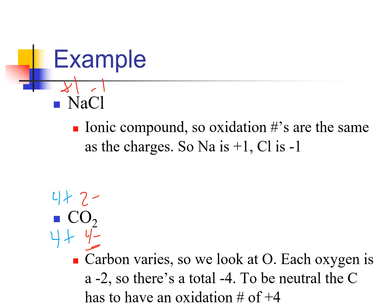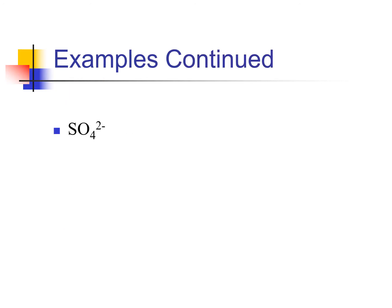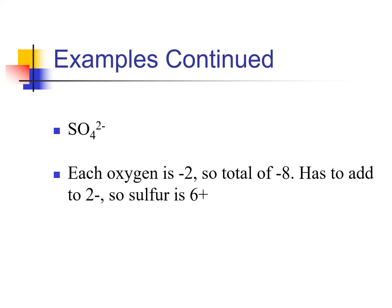My approach: start with the oxygen, write it up top, multiply by its subscript, then look at the charge and figure out what everything else has to be. For SO4 two-negative, each oxygen is still negative two, and there are four of them, giving a total of negative eight. The charge on sulfate is negative two. Negative eight plus what equals negative two? Plus six. So the sulfur has an oxidation number of plus six.